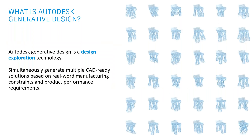Overall, Autodesk Generative Design is a design exploration technology that allows you to simultaneously generate multiple CAD-ready solutions based on real-world manufacturing constraints and product performance requirements. The manufacturing constraints are one of the key inputs — you can specify 3D printing or CNC machining, among other methods. This ensures that as the program generates solutions, you know whether they are manufacturable.